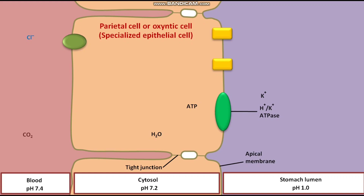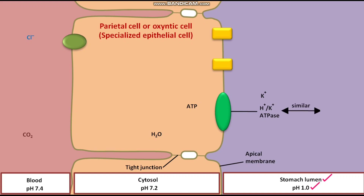The H+/K+ ATPase is a P-class ATP-powered ion pump. It faces the stomach lumen and generates a pH of 1.0 in the stomach lumen. The H+/K+ ATPase is similar in structure and function to the plasma membrane Na+/K+ ATPase.